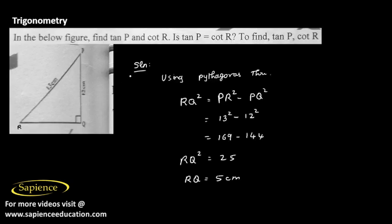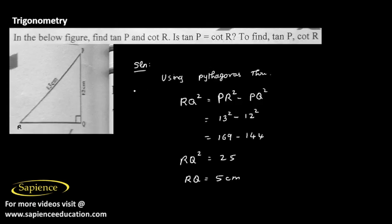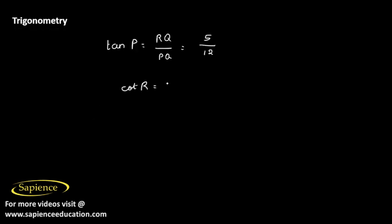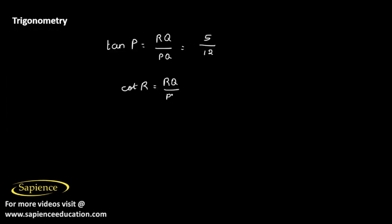We need to find the value of cotR. cotTheta is adjacent by opposite, so for R, the adjacent side is RQ and the opposite side is PQ, which will be again the same 5 by 12.